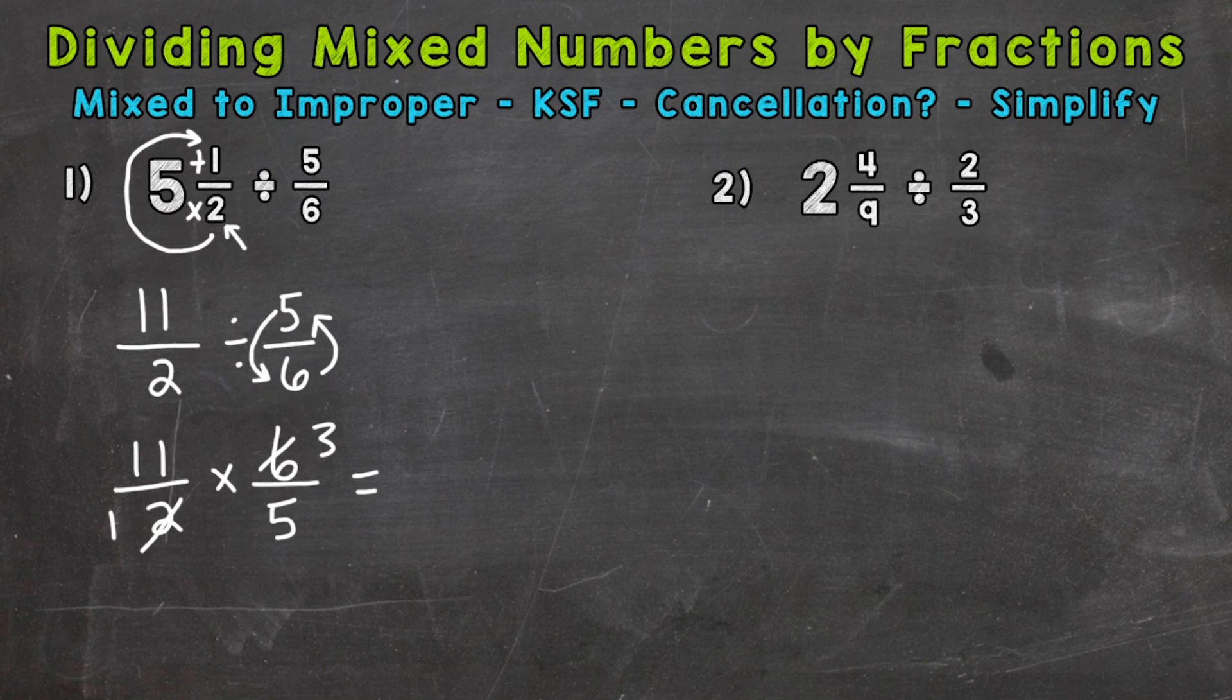So again, that cancellation helps simplify the problem before we multiply straight across. It gives us easier numbers to work with. Now the 11 and 5, they only have a common factor of 1. So we can't use cancellation there. So let's multiply straight across now. 11 times 3 is 33. And 1 times 5 is 5. So we get to 33 over 5.